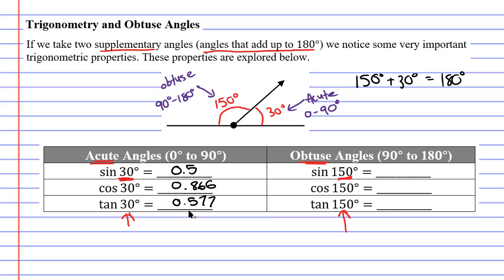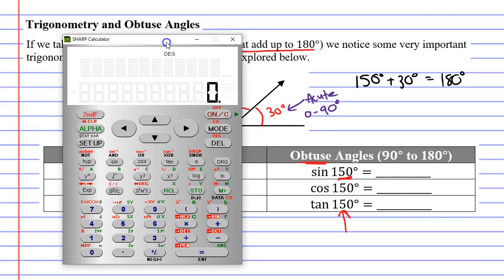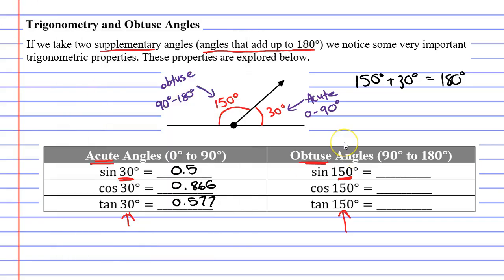Now we're going to move to the right column. Remember that our angle here of 150 degrees is supplementary to the angle of 30 degrees on the left. So we'll bring up our calculator now. Let's find sin of 150. We get 0.5. Notice that sin of 30 and sin of 150 gave us the same result.